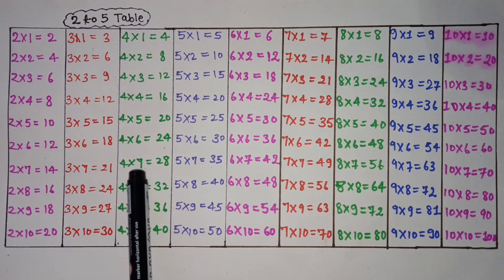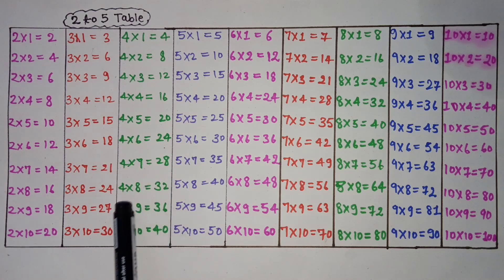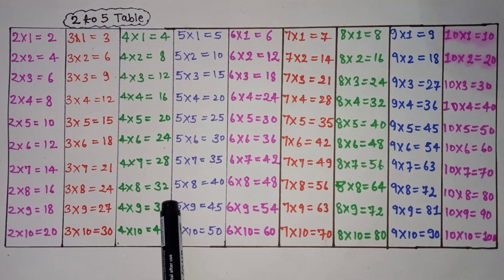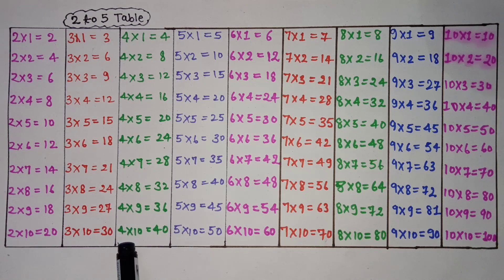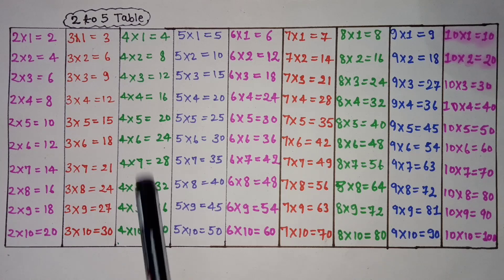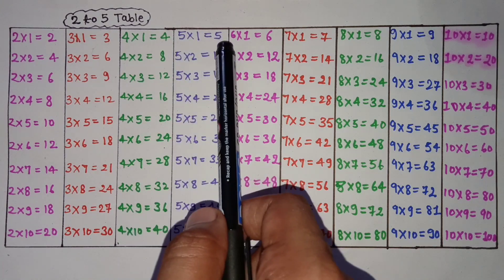4 7 is 28, 4 8 is 32, 4 9 is 36, 4 10 is 40. 5 1 is 5.